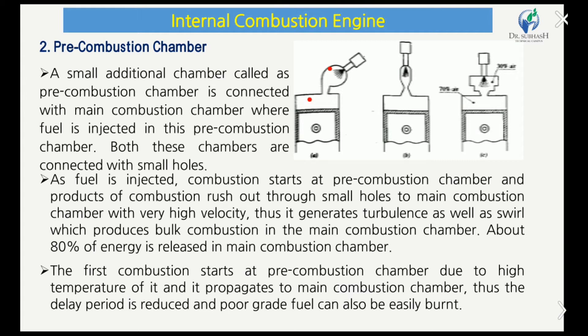In the pre-combustion chamber, there is a separate chamber connected to the main combustion chamber by a small hole. Fuel is injected into this pre-combustion chamber. Combustion starts in the pre-combustion chamber, and the products of combustion rush out through the small hole into the main combustion chamber with very high velocity. This generates turbulence and swirl, which produces bulk combustion in the main combustion chamber. About 80% of energy is released in the main combustion chamber.